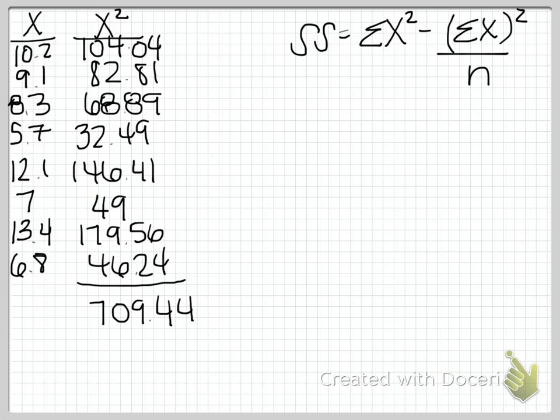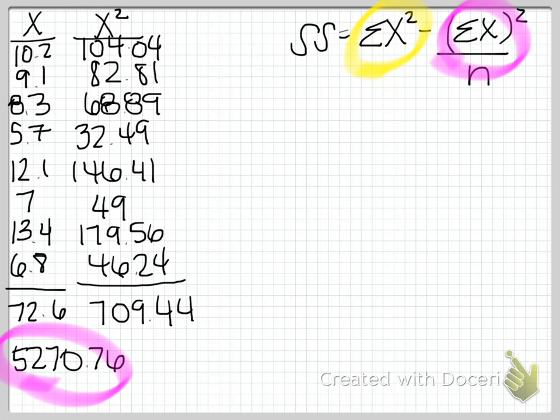So that gives me this number here. But now, we need to also find the sum of x, so adding up all our scores, and square that. So if we add up all of our scores, we get 72.6. And if we square that, we get 5,270.76. So now we have this number, which is here.